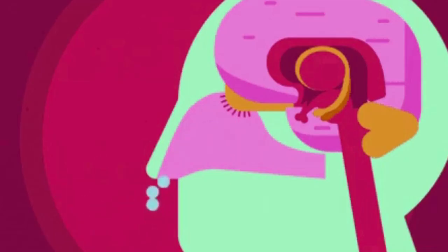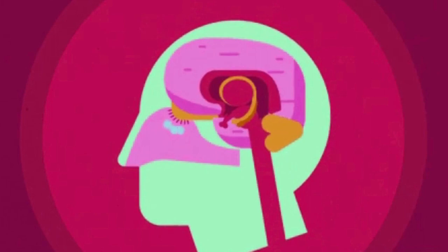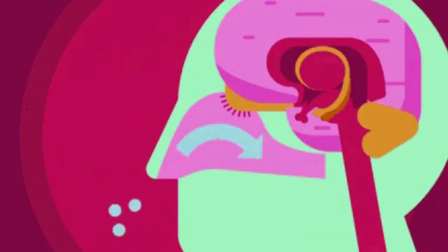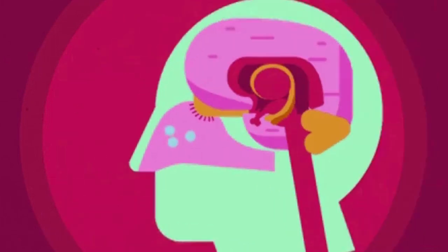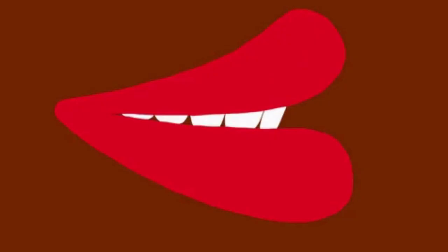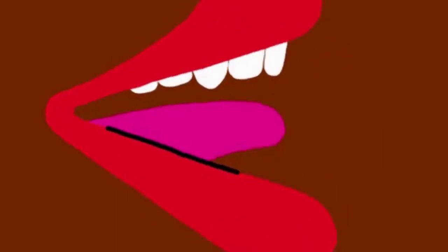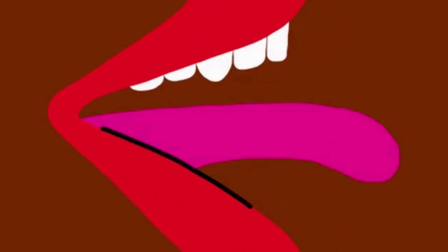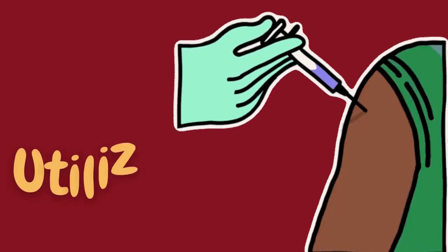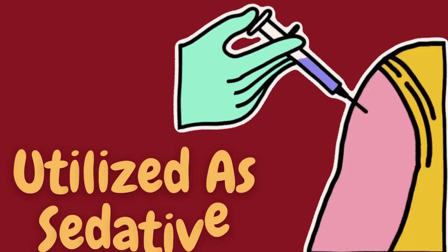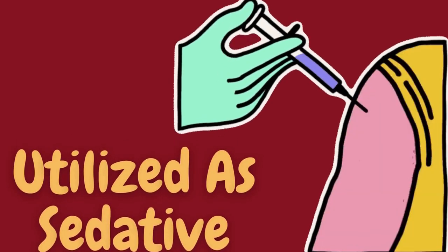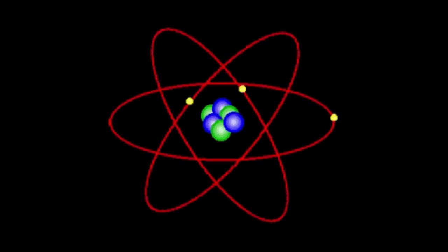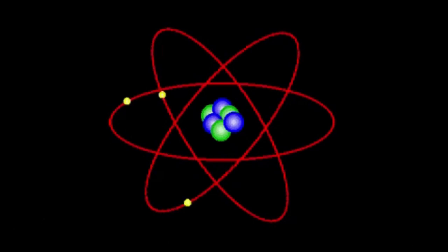One compound that does this is cocaine, whose painkilling effects were discovered accidentally when an ophthalmology assistant got some on his tongue. It is still sometimes used as a sedative. However, many of the more common local anesthetics have the same chemical structure and work the same way.